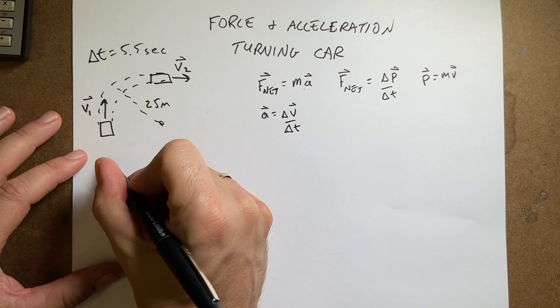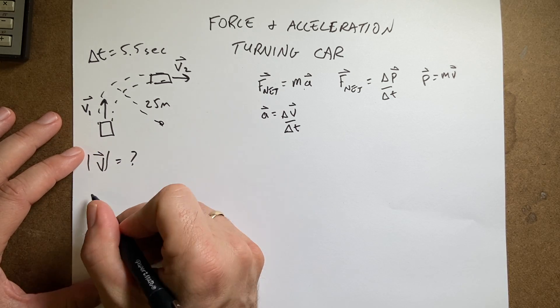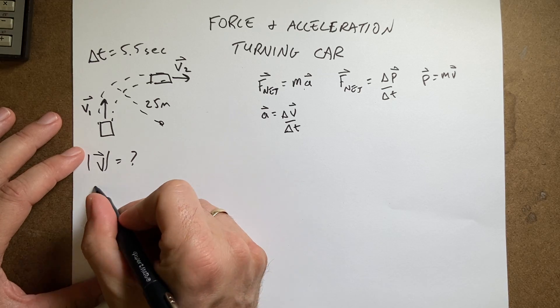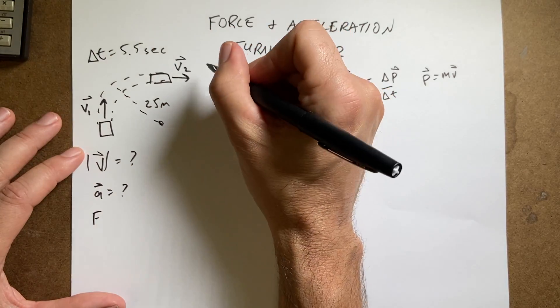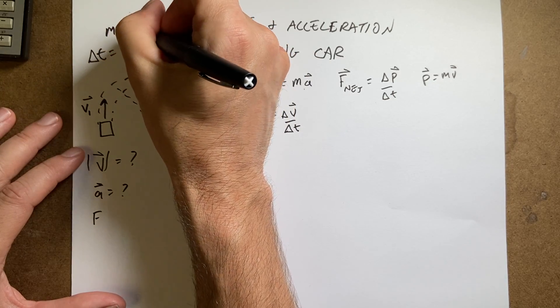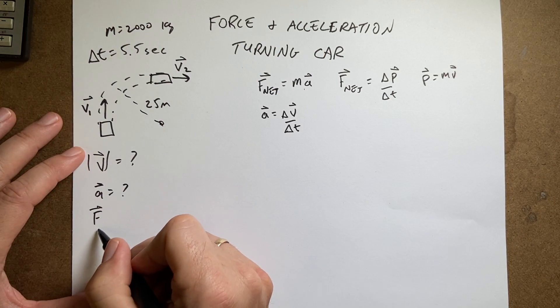So we want to find what's the magnitude of the velocity, what's the average acceleration. Oh I need the mass. Mass of the car is 2,000 kilograms.